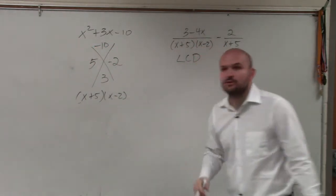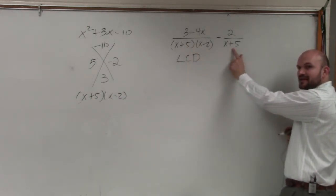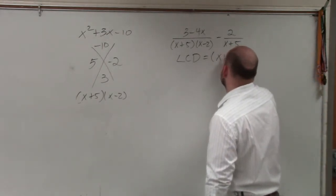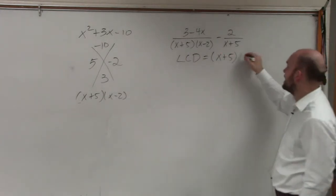Now, why is that so important? Because you see that the denominators already share an (x + 5). So their common denominator obviously has to include (x + 5) and just needs to include (x - 2).